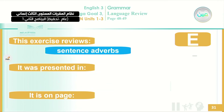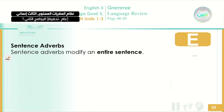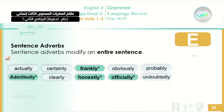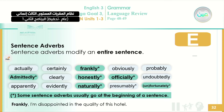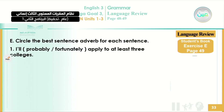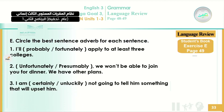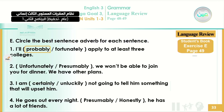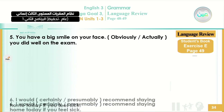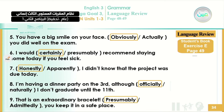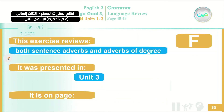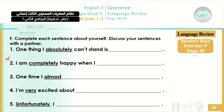Exercise E covers sentence adverbs, which we also talked about. These can be used at the beginning of a sentence to modify the whole sentence — examples include actually, frankly, obviously, and so on. For example: 'I am disappointed' becomes 'Frankly, I am disappointed in the quality of the hotel.' This is an exercise where you can get the model answers and complete the sentences yourself. One example to complete: 'One thing I absolutely can't stand is...' — complete it yourself.